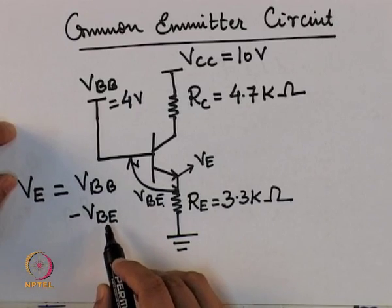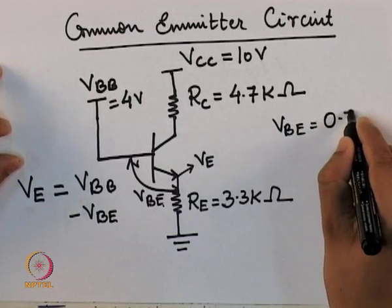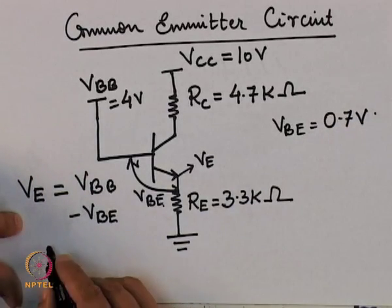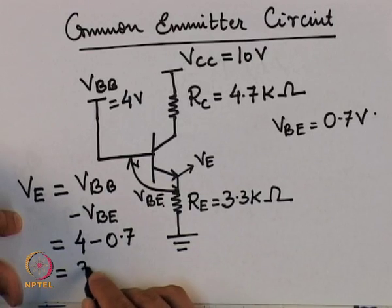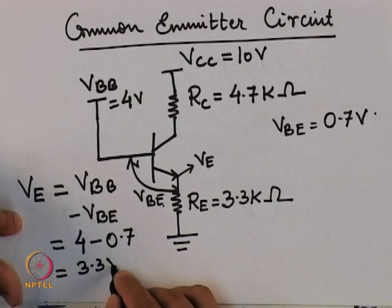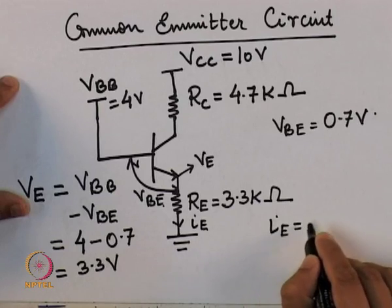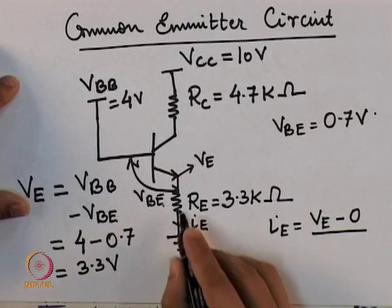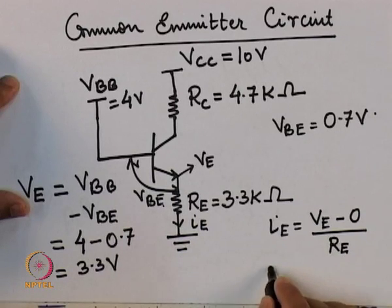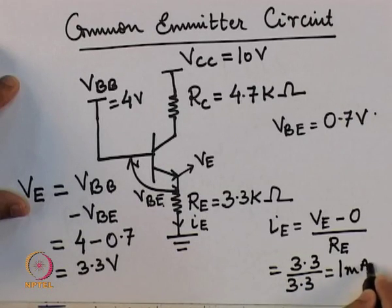The voltage at the emitter terminal Ve is given by VBB minus the base-to-emitter voltage. At room temperature, Vbe comes out to be equal to 0.7 volts. So Ve should be 4 − 0.7 = 3.3 volts, and the emitter current Ie = Ve / Re = 3.3 volts / 3.3 kΩ = 1 milliampere.